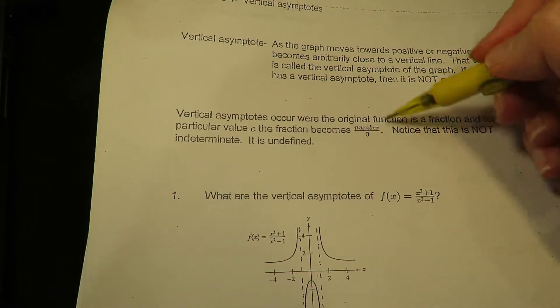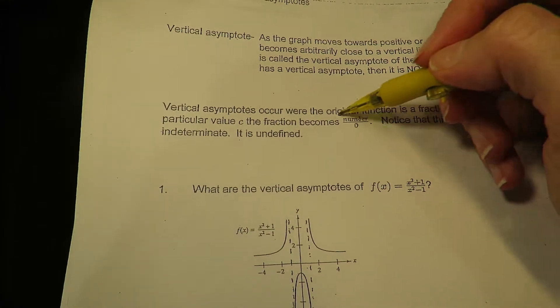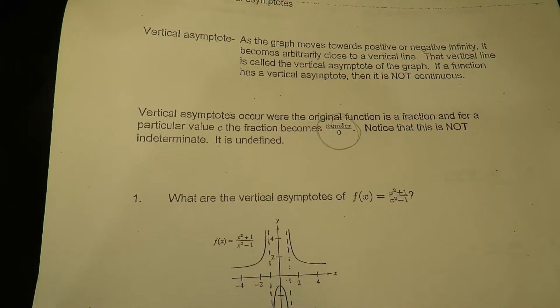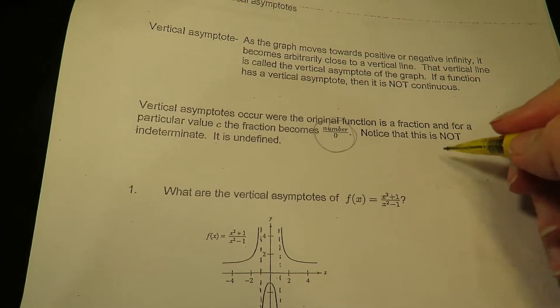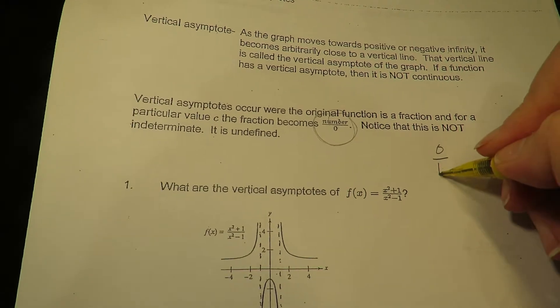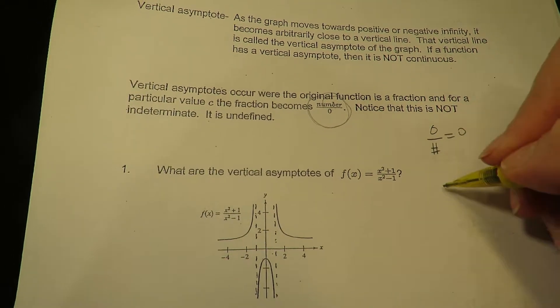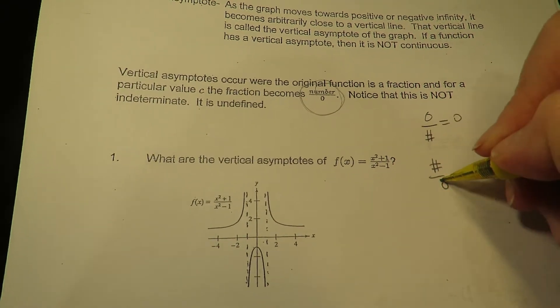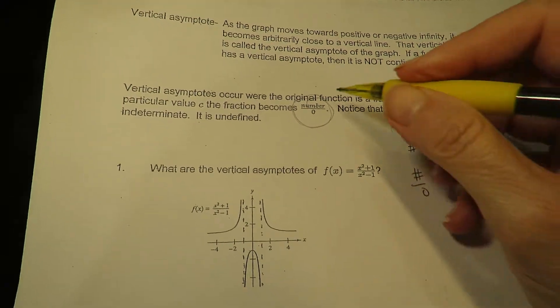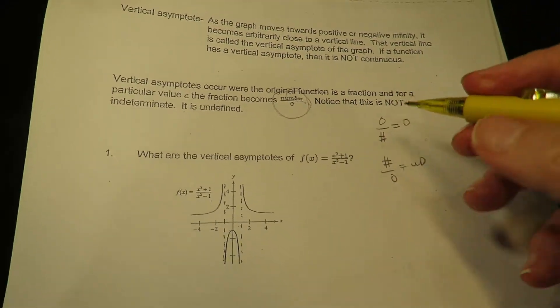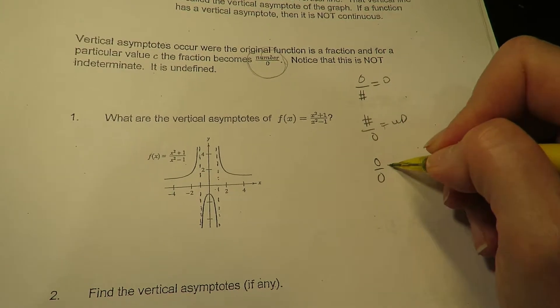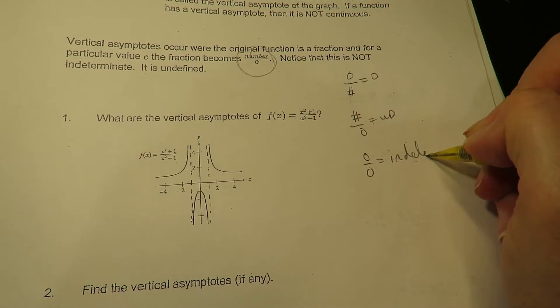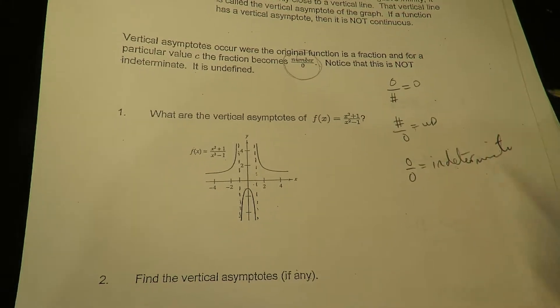It's really important that you notice a vertical asymptote happens when you have a number over 0. So you've got to be really careful on these distinctions. 0 over a number is 0. A number over 0 is undefined. So here's the case where we're saying that you've got a VA, and 0 over 0, as we mentioned before, is indeterminate. So you've got to sort of keep these different categories in your head.